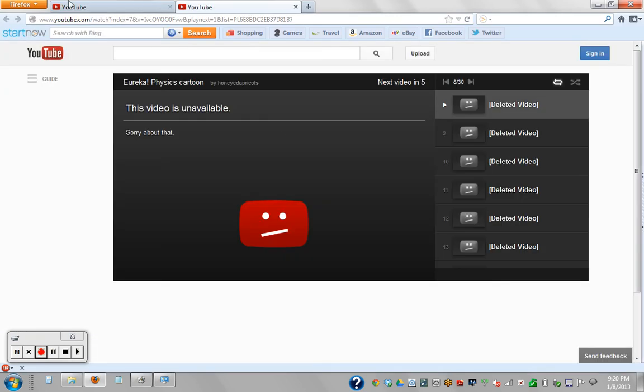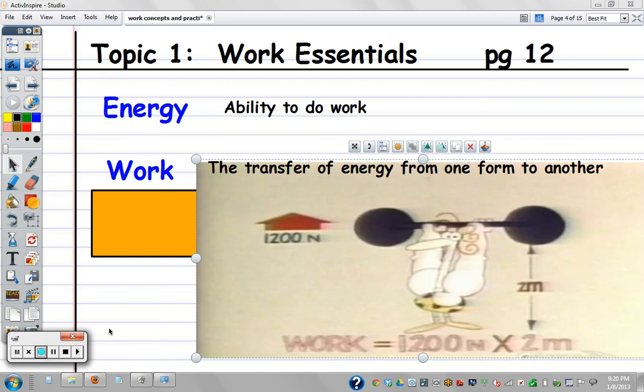And work is a transfer of energy from one form to another. For example, if you're lifting a weight, you're doing work, you're actually converting chemical energy kind of stored in your body from the food that you've eaten into mechanical energy of lifting something. So you're transferring it from one type to another, and that's when work is done.